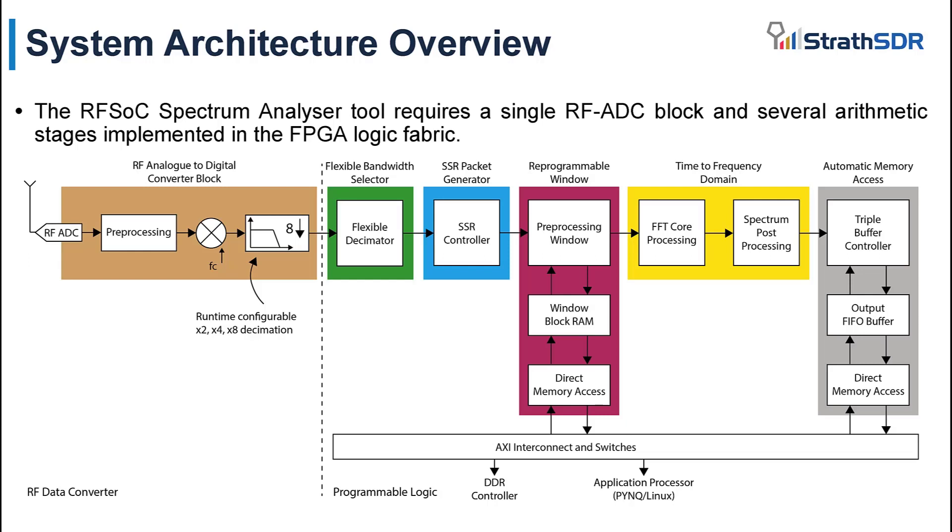FFT core processing is implemented in the FPGA logic fabric so that it may be hardware accelerated. There are several FFT cores of different lengths in the FFT core processing block. Spectrum post processing is also implemented in the FPGA logic fabric. In particular, floating point arithmetic is deployed to obtain accurate frequency measurements. Finally, a triple buffer technique is used to write the output frequency domain frames to external memory. The processing system can access external memory and obtain these frames as required.